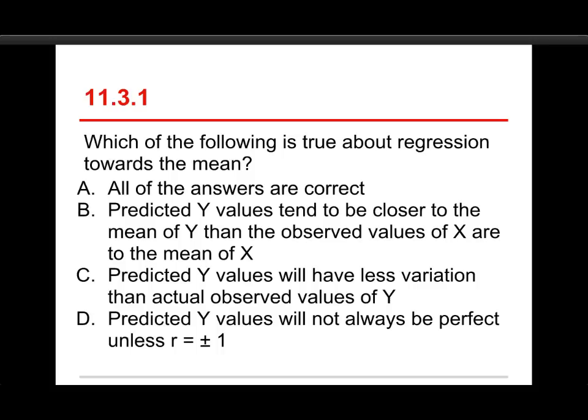C, the predicted Y values will have less variation than actual observed values of Y. And D, the predicted Y values will not always be perfect unless R is equal to plus or minus 1.